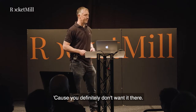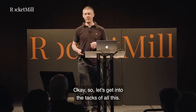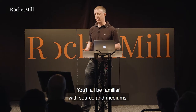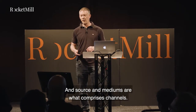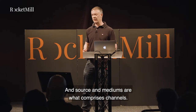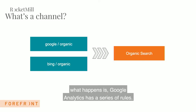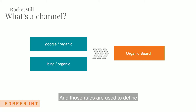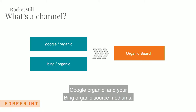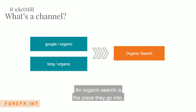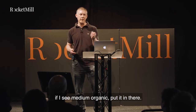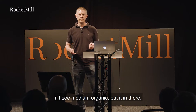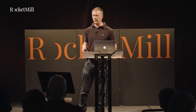Let's get into the crux of all this. You'll all be familiar with source and mediums, and source and mediums are what comprise channels. In your organic search channel, Google Analytics has a series of rules that define what traffic goes into it. In this case, your Google organic and Bing organic source/mediums go into organic search because GA has rules that say: if I see medium 'organic', put it in there.